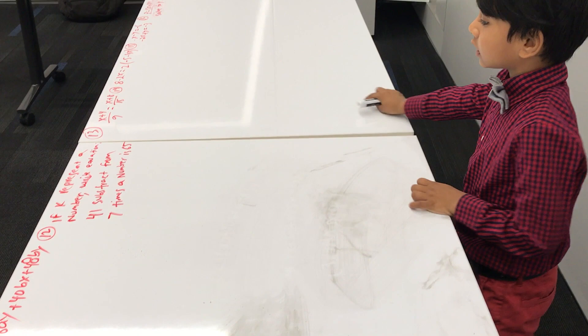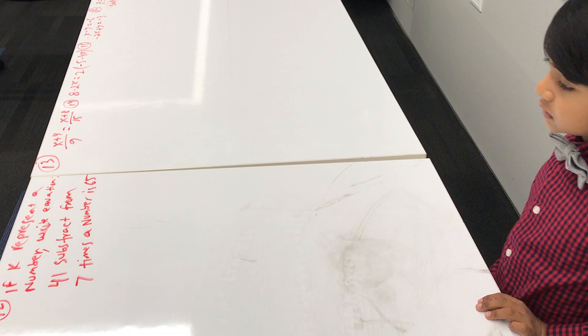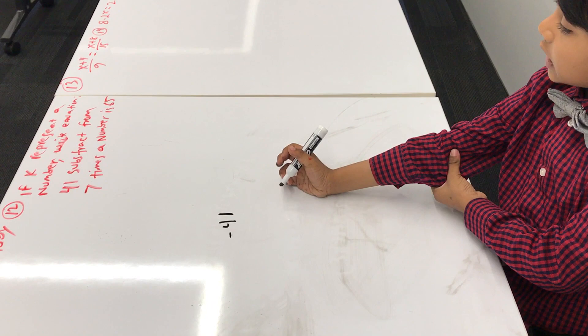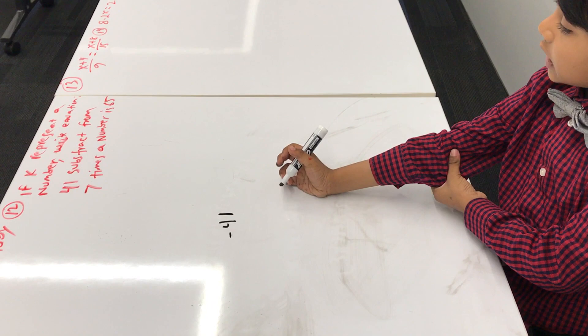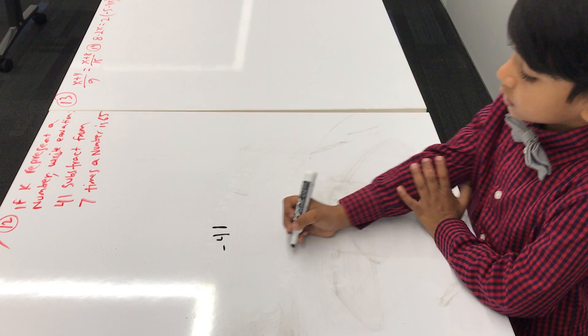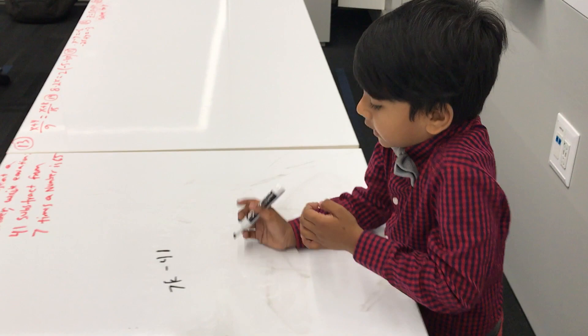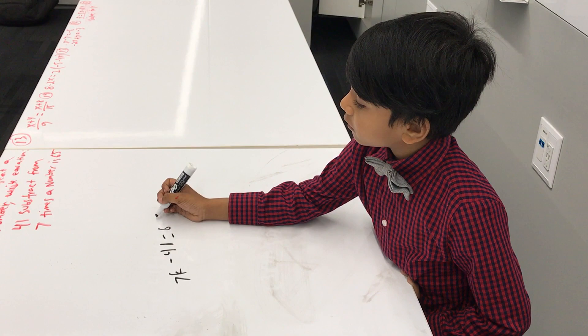If k represents a number, write the equation: 41 subtracts from 7 times the number is 65. So 41 subtracted from — that's minus 41. And 7 times the number — that's 7 times k. When I multiply 8 and b, I get 8b. So 7 times k is 7k. So 7k minus 41, and that result says 65. So that's our answer: 7k minus 41 equals 65.